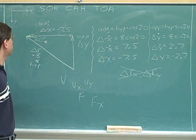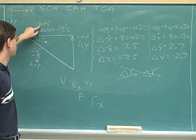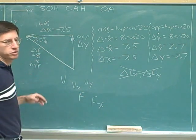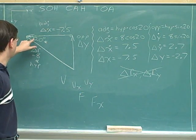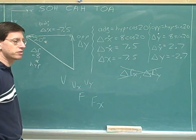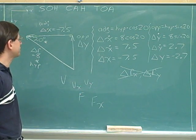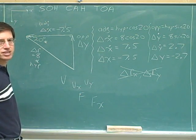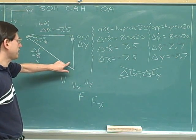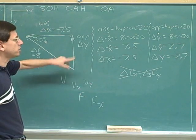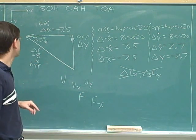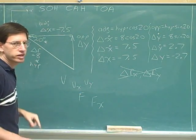As long as you correctly label which side is adjacent to the angle you were given and which side is opposite, you can use the same techniques. It doesn't matter whether the angle is at the head or tail of the overall vector. If you wanted to work with the complementary 70-degree angle at the tail, you could — but people usually prefer to use the angle originally given, so we did that here as well.